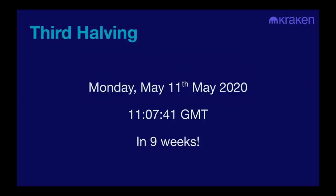The third halving this year will be in approximately nine weeks, on May 11th at 11:07 GMT — though it's an estimate since blocks come out every 10 minutes only on average. In all likelihood it'll be plus or minus a couple of hours. I'm sure there will be parties both in person and online. Follow along on Twitter for livestreams and virtual meetups, since we don't want to be meeting in person in the middle of a pandemic. To me, this is an illustration of what makes Bitcoin interesting — that this network is able to, in a decentralized manner, enforce the scarcity of Bitcoin.